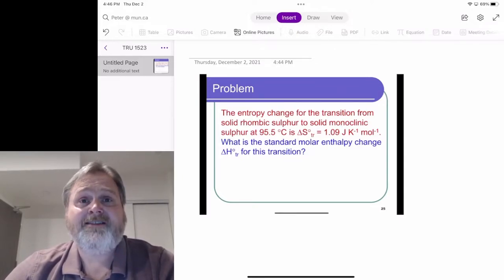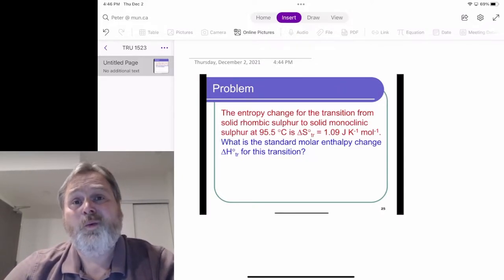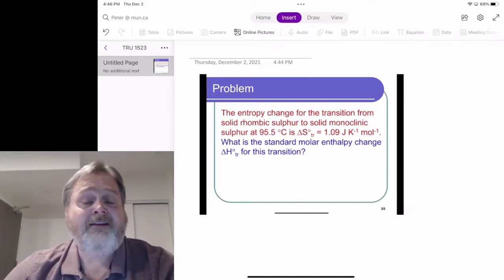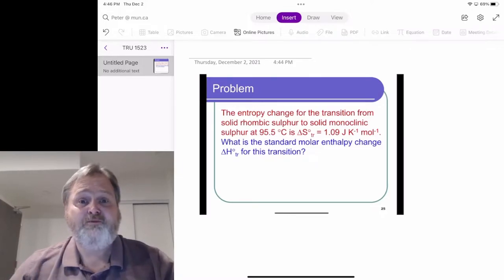Small entropy changes for phase transitions will imply small energy changes. Because again, the energy change is really what's determining how things are now being spread out.